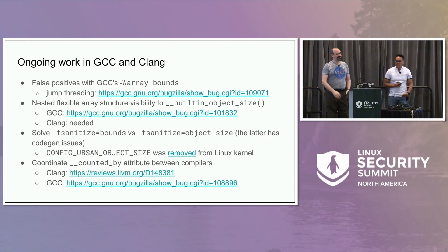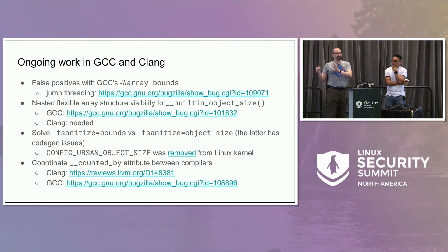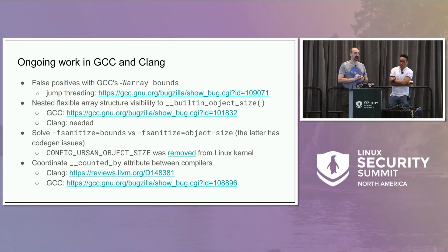There's also a problem with nested flexible array structures. If you're counting a one-element array that's in a structure and some other structure includes that structure, you get a nested series of structures ultimately ending in a flexible array. GCC and Clang, if you ask the built-ins how big the inner structure is, say they don't know — it ends in a dynamically sized thing. But if you ask how big the outer structure is, they say it's exactly the size of those two structures, pretending the flexible array doesn't exist. Changing the visibility of that is ongoing in GCC, and we'll get it in Clang too, though we're waiting for it to be finalized in GCC first.